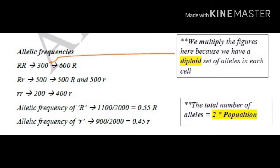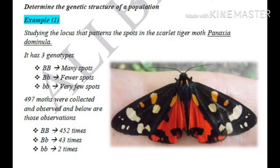Next, let's dive into even more examples. In example number 1, we are studying the locus that patterns the spots of the scarlet tiger moth, Panaxia dominula. It has three genotypes: BB (many spots), B small b (fewer spots), and small b small b (very few spots). The total observed is 497 moths — 452 had BB, 43 had B small b, and 2 had small b small b. Please pause the video here and try to calculate the genotypic frequencies and allelic frequencies.